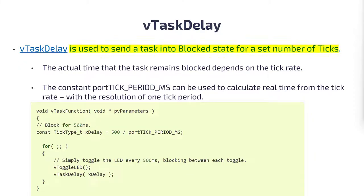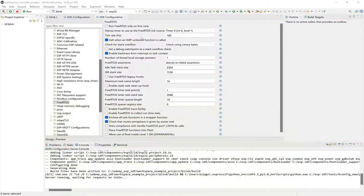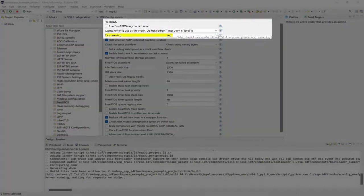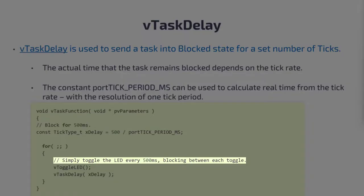About vTaskDelay: it's used to send the task into the blocked state for a set number of ticks. The actual time the task remains blocked depends on the tick rate, and the constant portTickPeriodMS can be used to calculate real time from the tick rate. For example, if the FreeRTOS tick rate in the SDK config is set to 100 Hz, then portTickPeriodMS is 10 ms. So 500 divided by 10 is 50 ticks passed to vTaskDelay, and with 50 ticks at a period of 10 ms, we end up with a 500 ms delay.